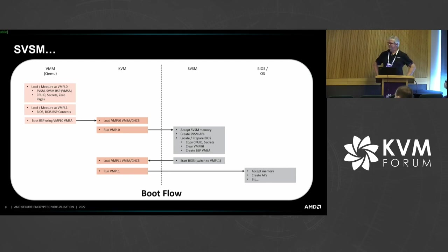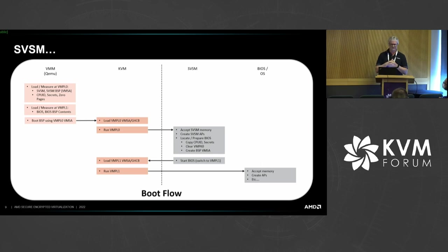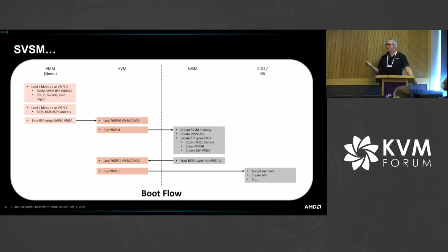The overall boot flow of how this SVSM will start up is very similar to a standard SEV boot today, but instead of loading and measuring the SNP guest at VMPL 0, we're going to load and measure the SVSM binary at VMPL 0 along with its CPU ID page, secrets page, and other things. We'll then load and measure the OVMF BIOS at VMPL 1, and we also include the OVMF BSP contents and measure those. We don't create a VMSA page out of that — we just measure those contents and it'll be up to the SVSM to copy those contents and create the BIOS BSP.